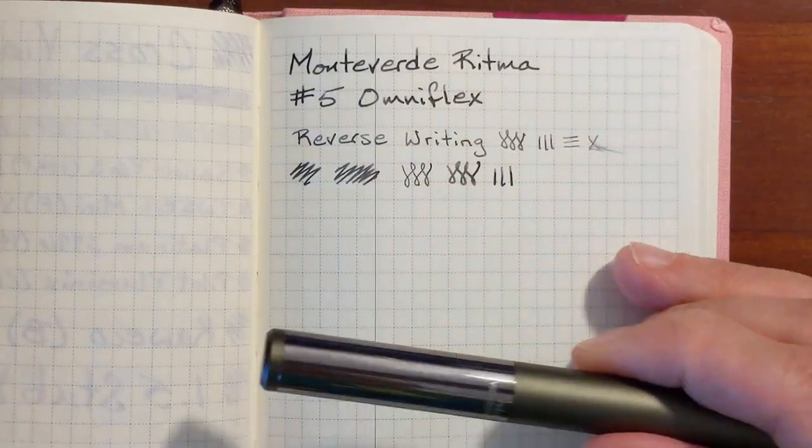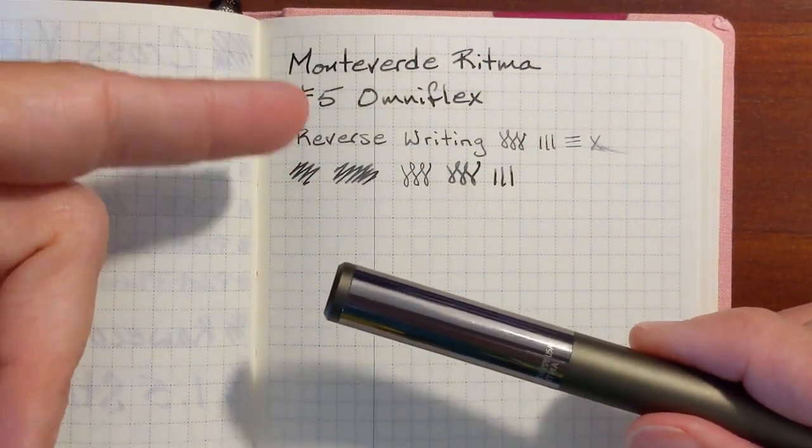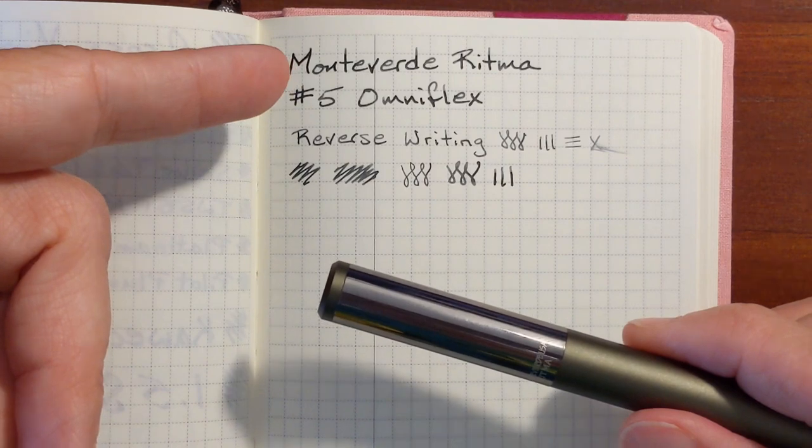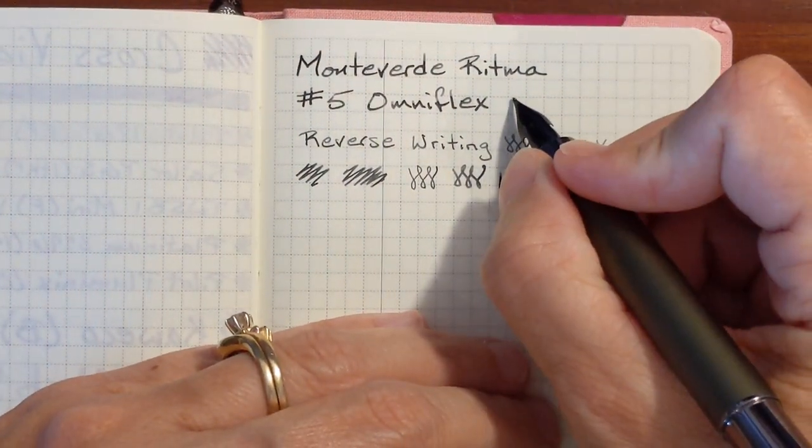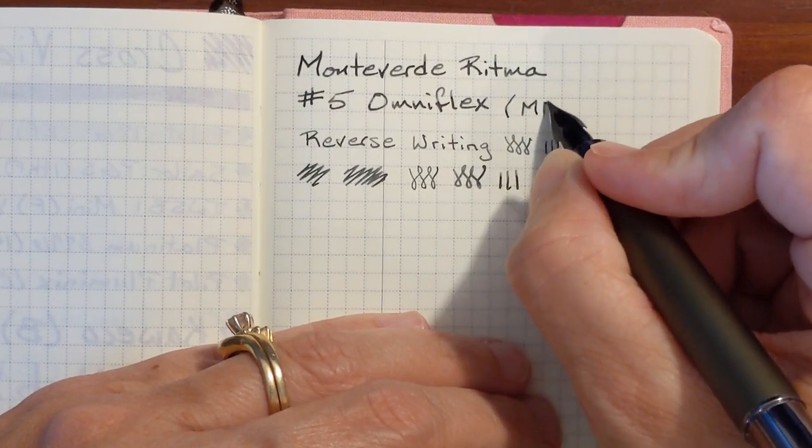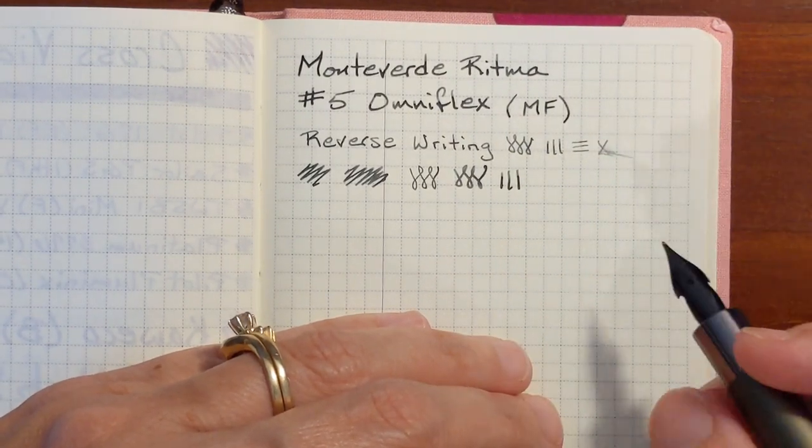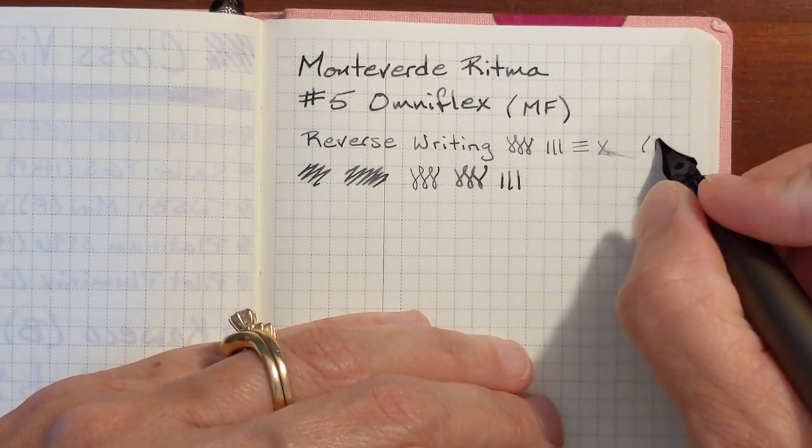Now, one of the things I really like about this nib is that it's like two nibs in one. You've got the, I would call this OmniFlex, they don't say what size it is, but it feels like a medium fine to me. And then the reverse writing seems like an extra fine.